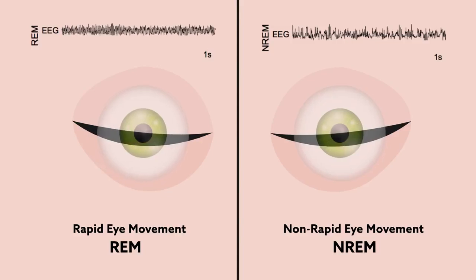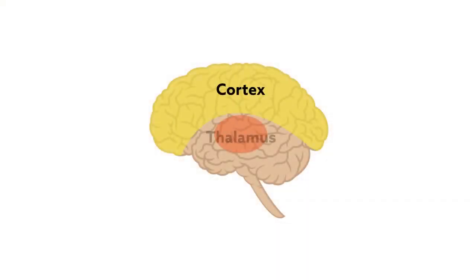This slow, steady rhythm is possible because of the coordination of two brain regions, the cortex and thalamus.